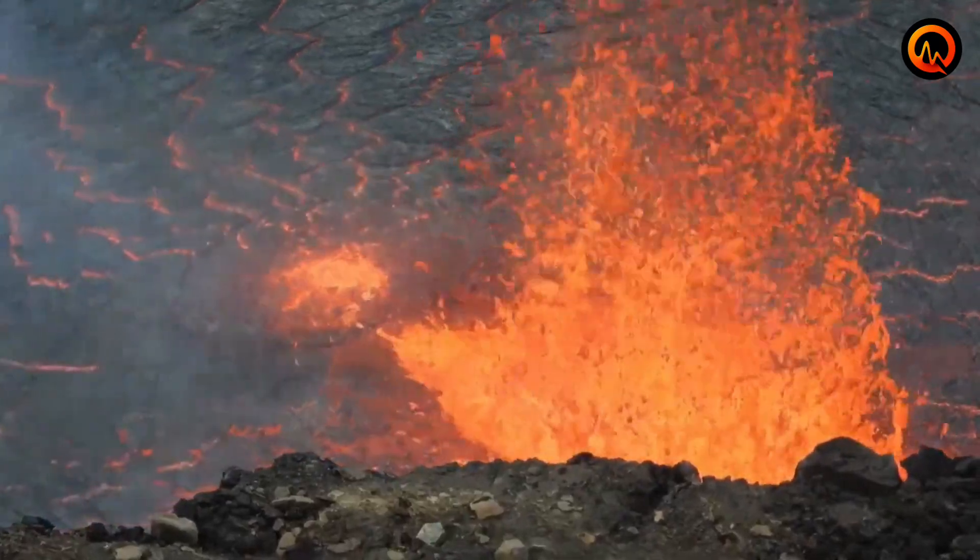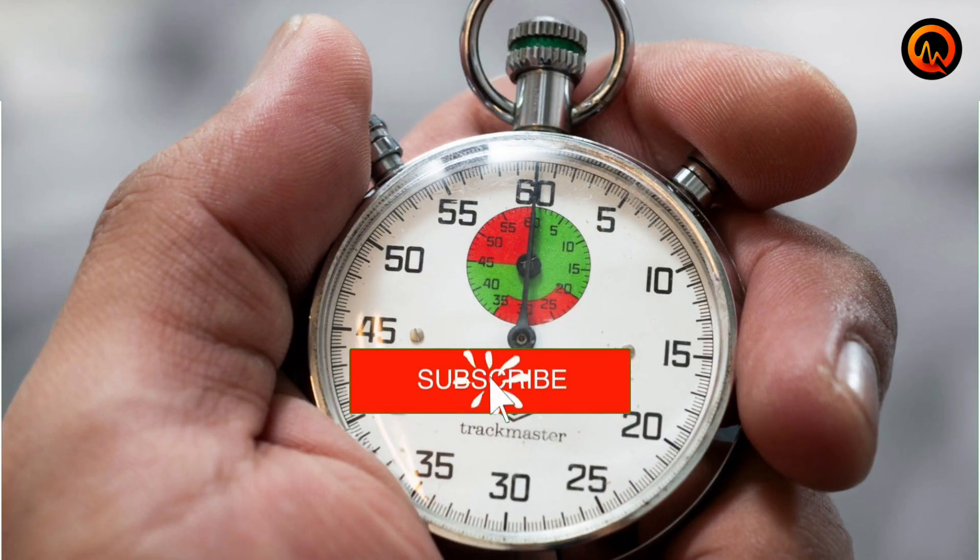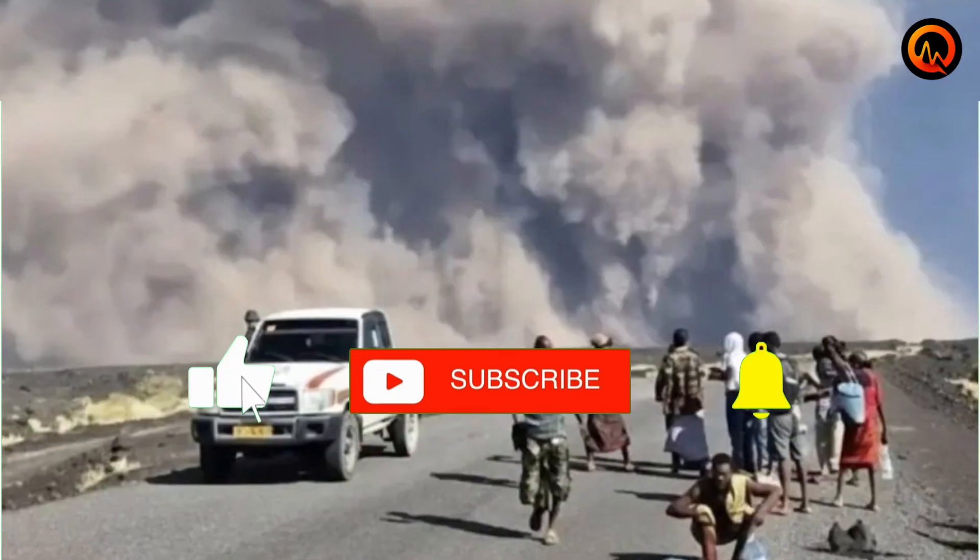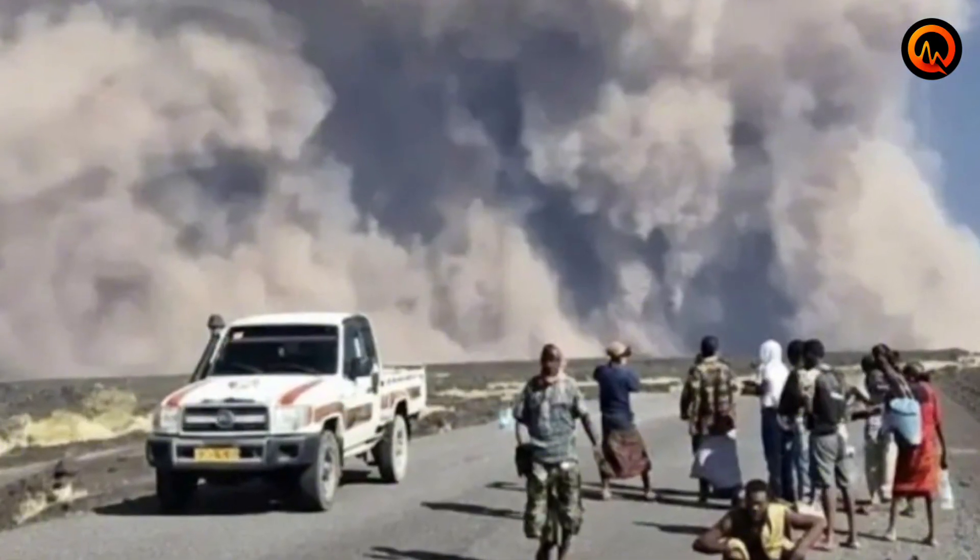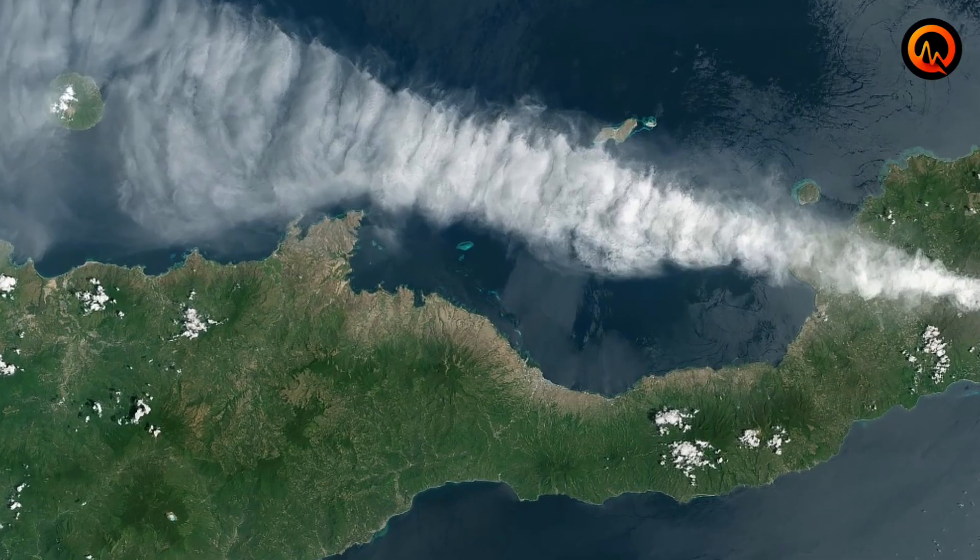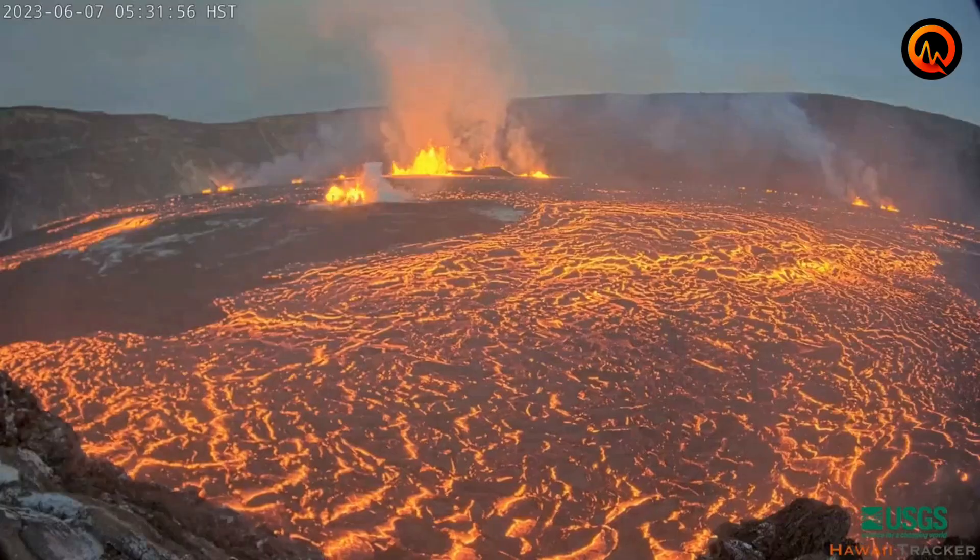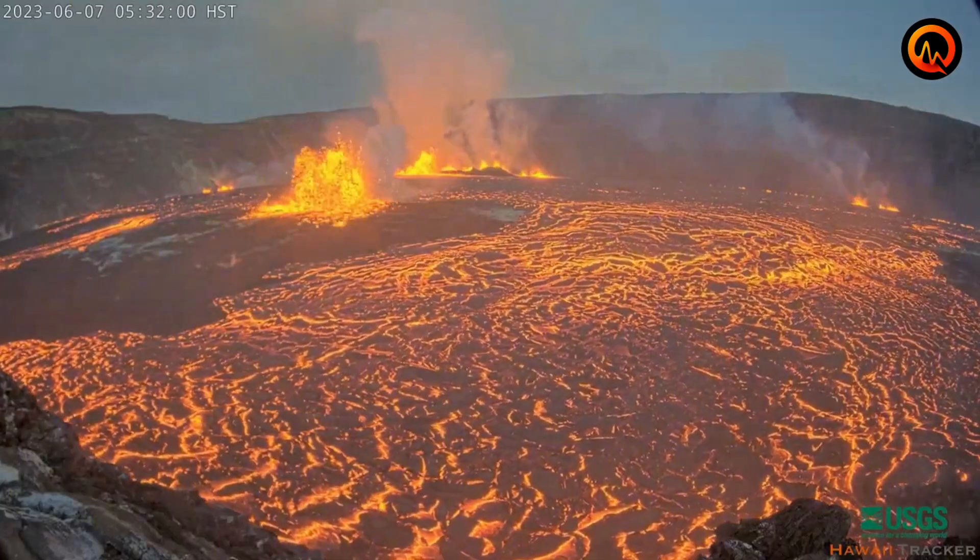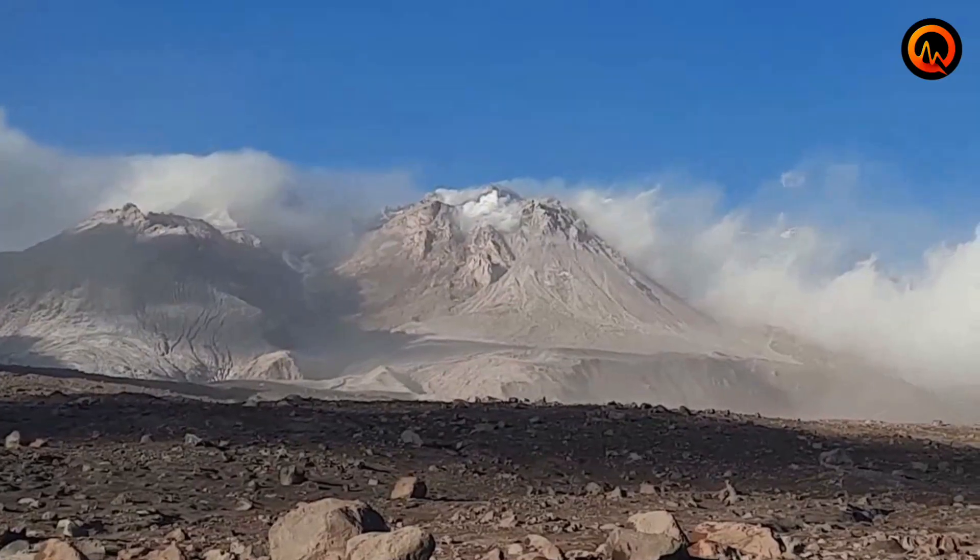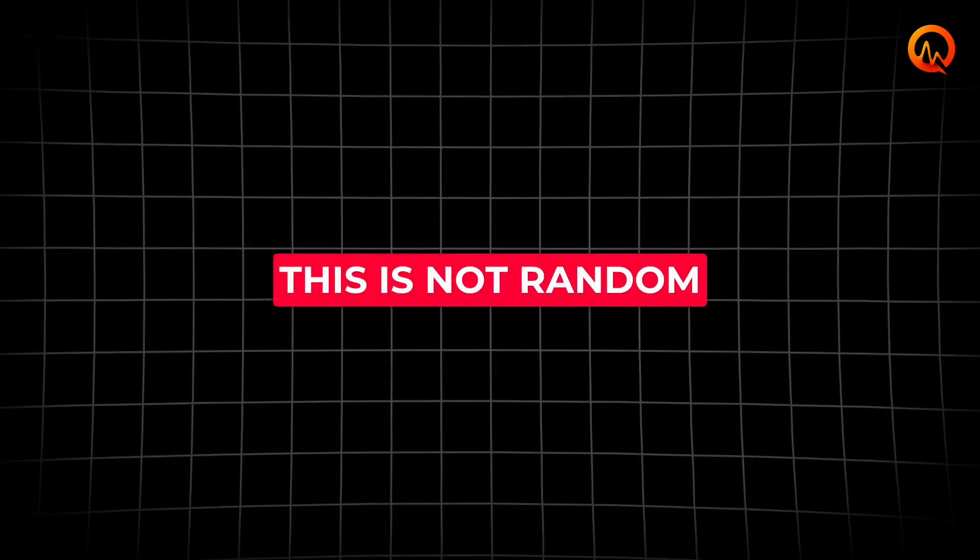Six volcanoes erupted across six different continents within the span of just three weeks. Ethiopia's Haley-Gubi volcano sent ash clouds stretching all the way to East Asia. Indonesia's Mount Siamaru joined the surge. Kilauea roared back to life in Hawaii. Russia, Colombia, and Mexico followed suit. This is not random.